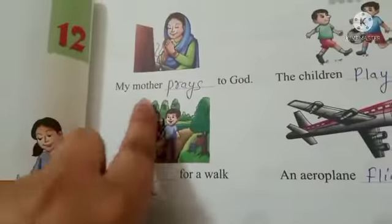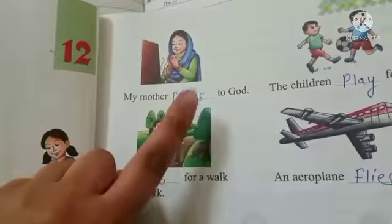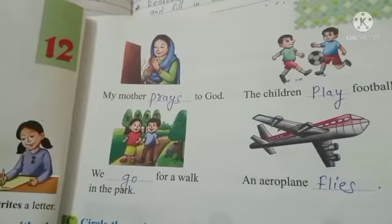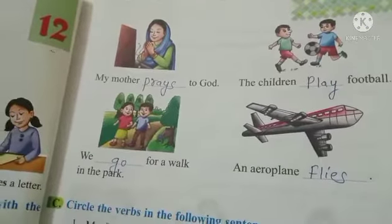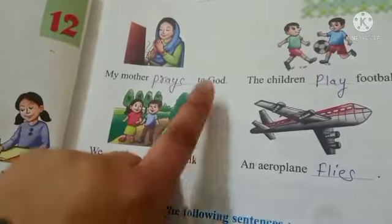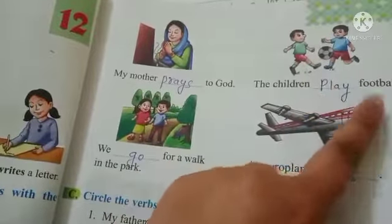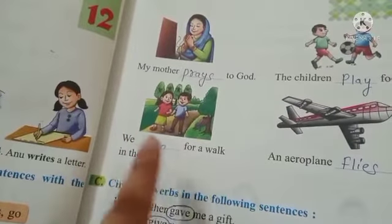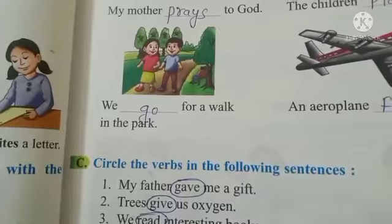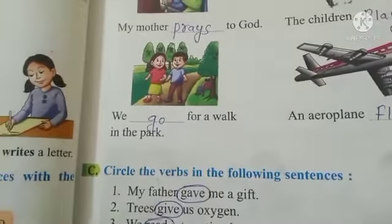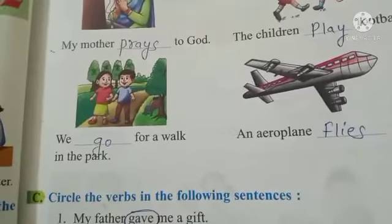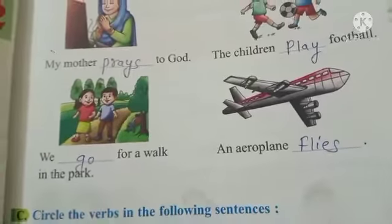And my mother prays to God — praying is an action. Mother, she is praying. And the children play football. What are the children doing? They are playing. Play is an action. We go for a walk in the park — going is an action. An aeroplane flies — flies is an action.